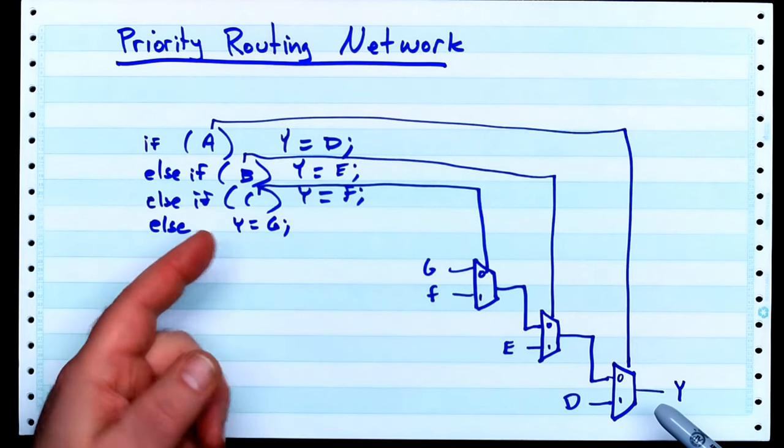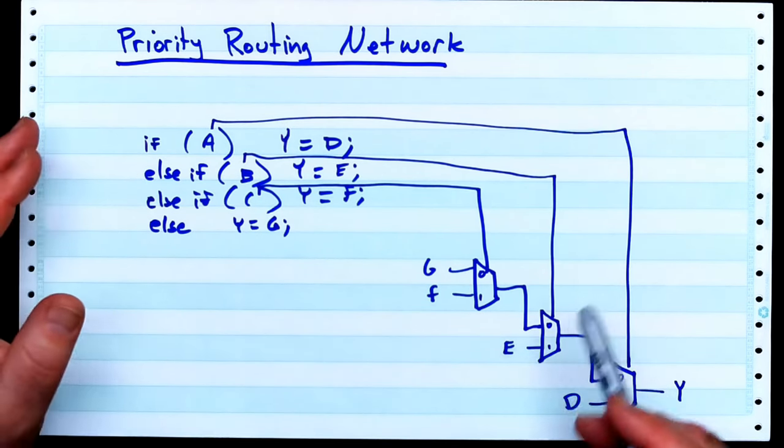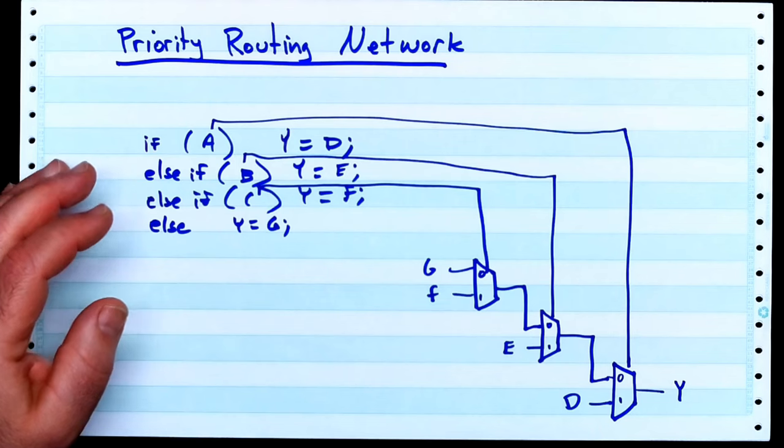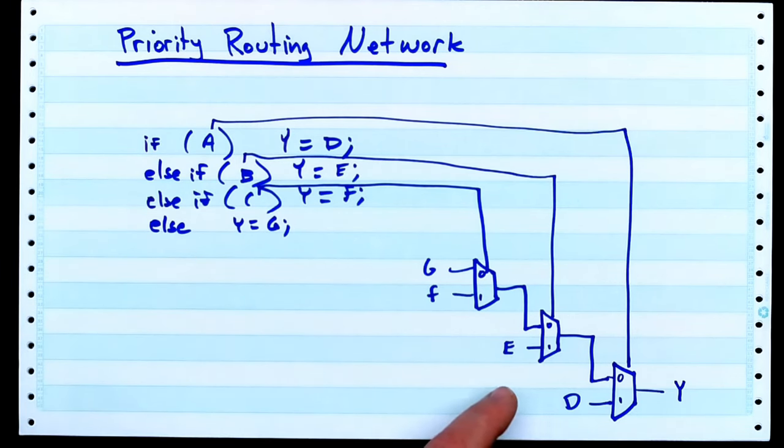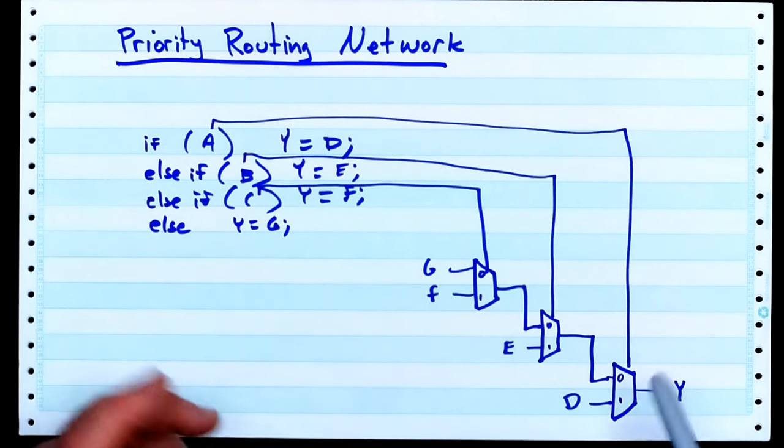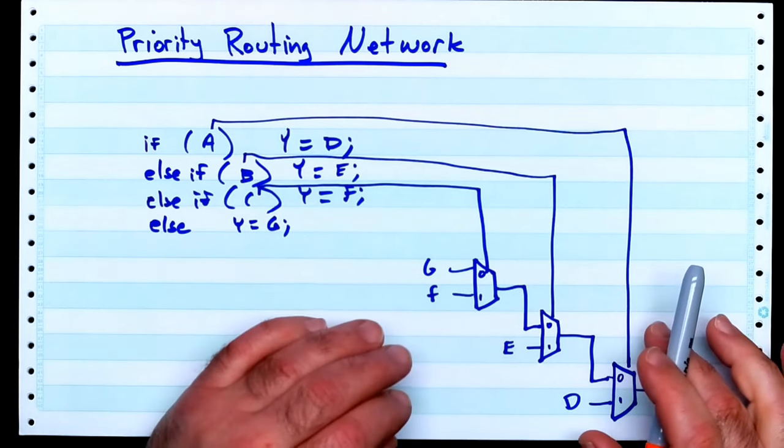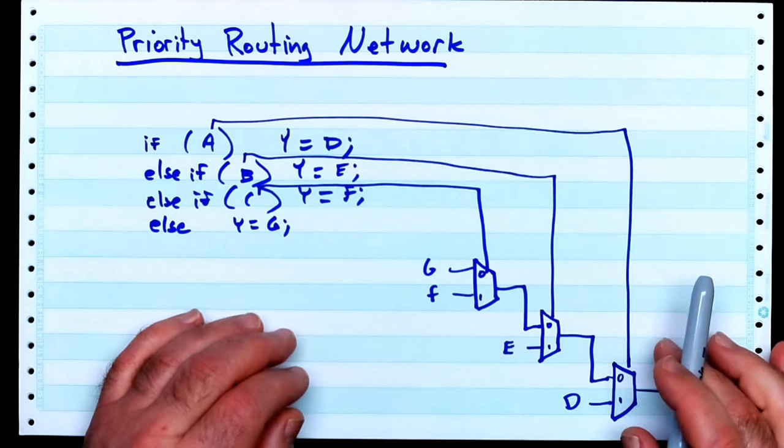This, of course, depends on your compiler and your compiler options that you're using. Maybe all if-then-elses don't always turn into a priority routing network depending on your tools, but they can. And you can also get these other ways when you're writing your code.